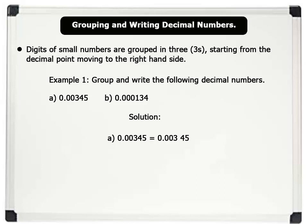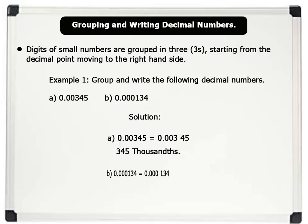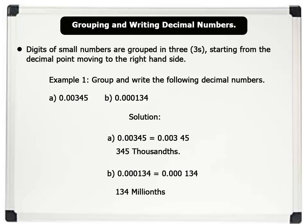Now, let's read the numbers in words. Three hundred and forty-five thousandths. B. Arrange the digits in threes, starting after the decimal point. Now, let's read. One hundred and thirty-four millionths.